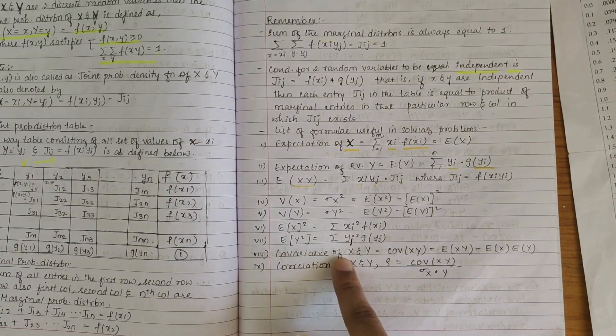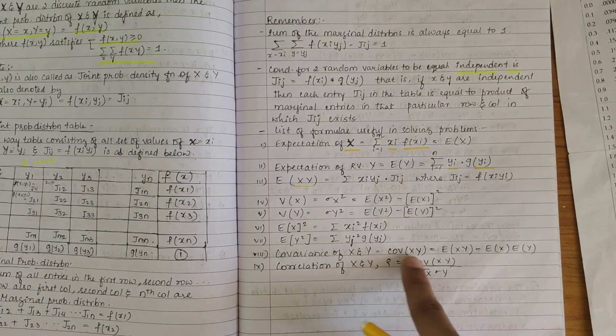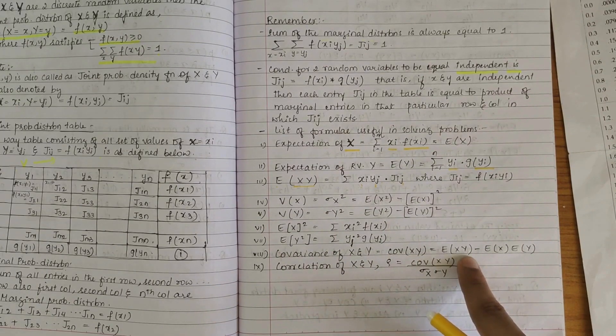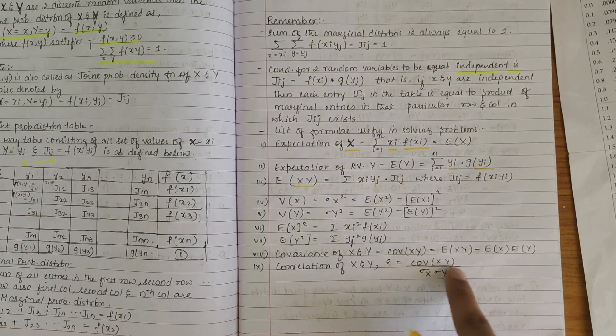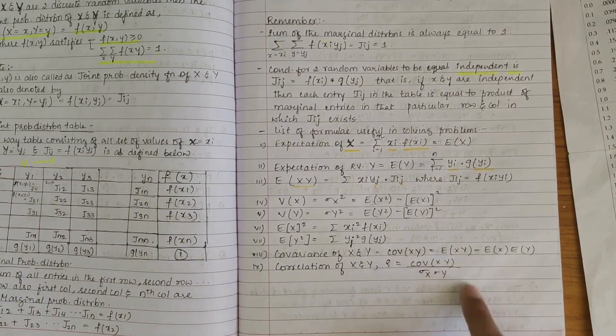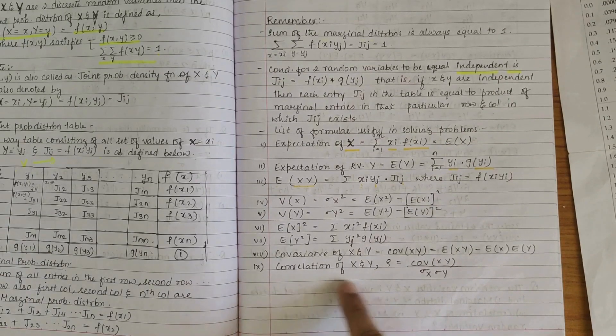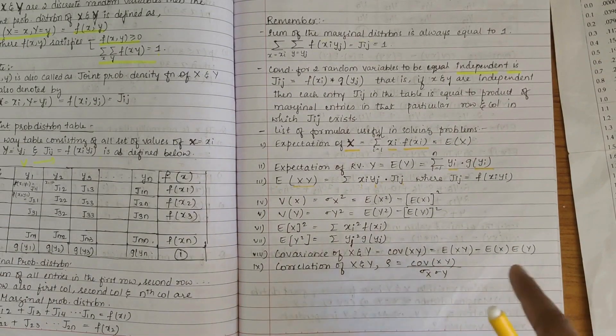And covariance is, covariance of XY is Cov(X,Y) equals E(XY) minus E(X) into E(Y). And correlation is covariance of XY by sigma X into sigma Y.